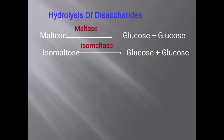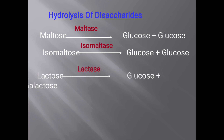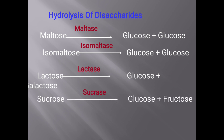Maltose is converted to glucose plus glucose (two molecules) — it is malt sugar, and the enzyme is maltase. Isomaltose is broken down by isomaltase. Lactose is broken down by lactase. Sucrose is a non-reducing sugar which you studied in carbohydrates; it is broken down to glucose and fructose. The enzyme is sucrase. All these reactions are hydrolysis using H₂O.